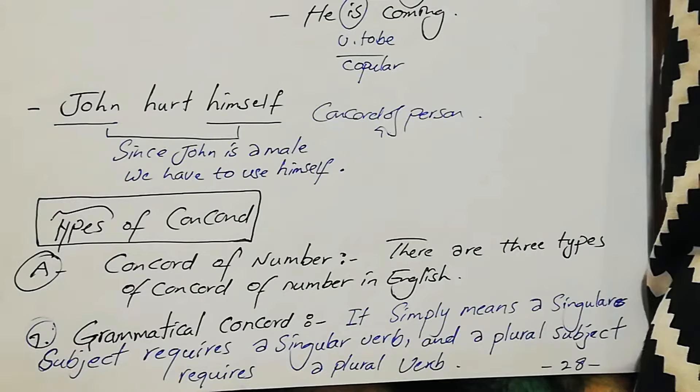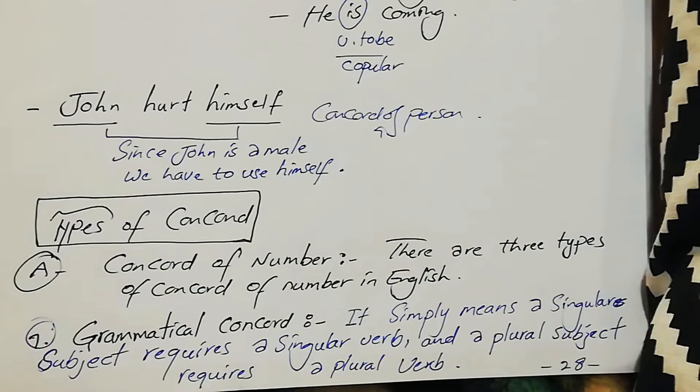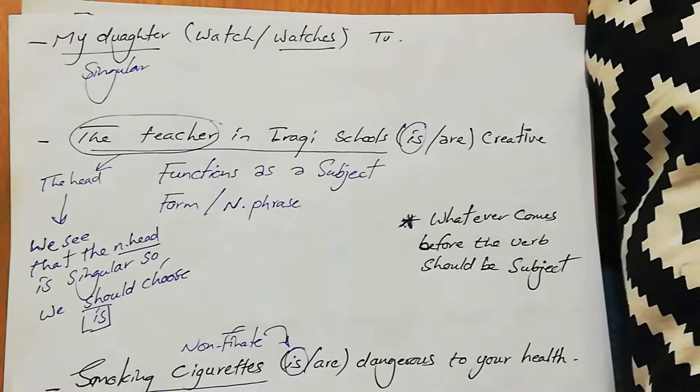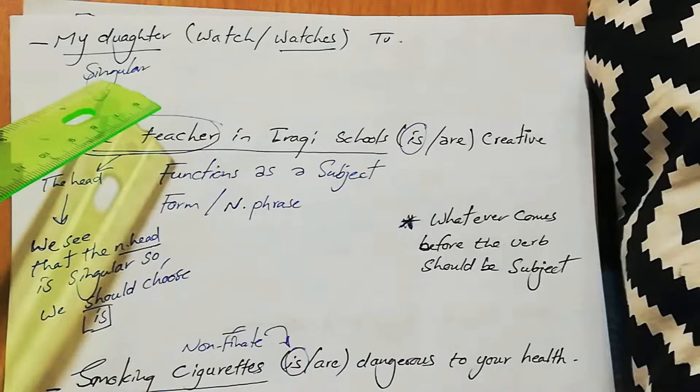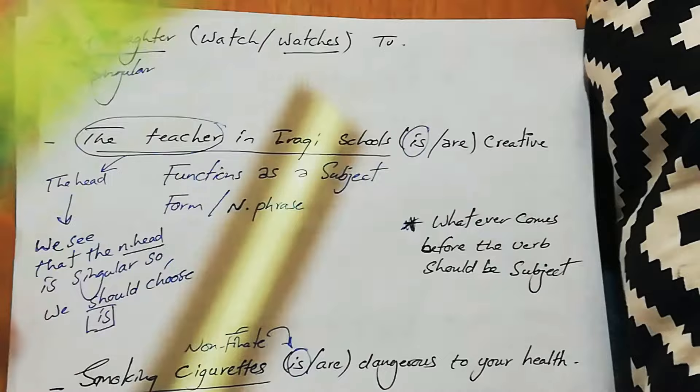For example, 'They are coming.' 'They' is the subject, which is a plural subject, so we have to use a plural verb — 'are.' Here, 'My daughter watches TV' — of course 'watches' because 'daughter' is singular. A singular subject requires 'watches.' Another example: 'The teacher in Iraqi schools is/are creative.'